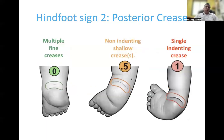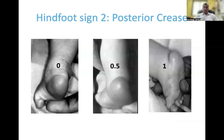The posterior crease sign is somewhat similar to the medial crease. Multiple fine creases score 0, a single shallow crease scores 0.5, and a single deep crease scores 1. These are clinical photos depicting scores 0.5 and 1 for the posterior crease.